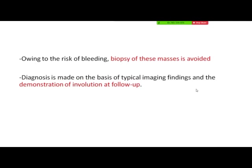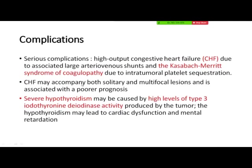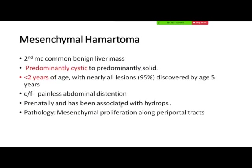All three types of hemangiomas carry a risk of bleeding because of multiple arteriovenous channels, so biopsy is generally avoided if imaging is diagnostic. Other important aspect is demonstration of involution on follow-up — all these hemangiomas involute eventually. Serious complications include congestive heart failure due to arteriovenous shunts, Kasabach-Merritt syndrome due to platelet sequestration causing coagulopathy. CHF is seen in solitary and multifocal lesions. Severe hypothyroidism occurs due to high type 3 iodothyronine deiodinase activity in the tumor, which decreases thyroid levels.